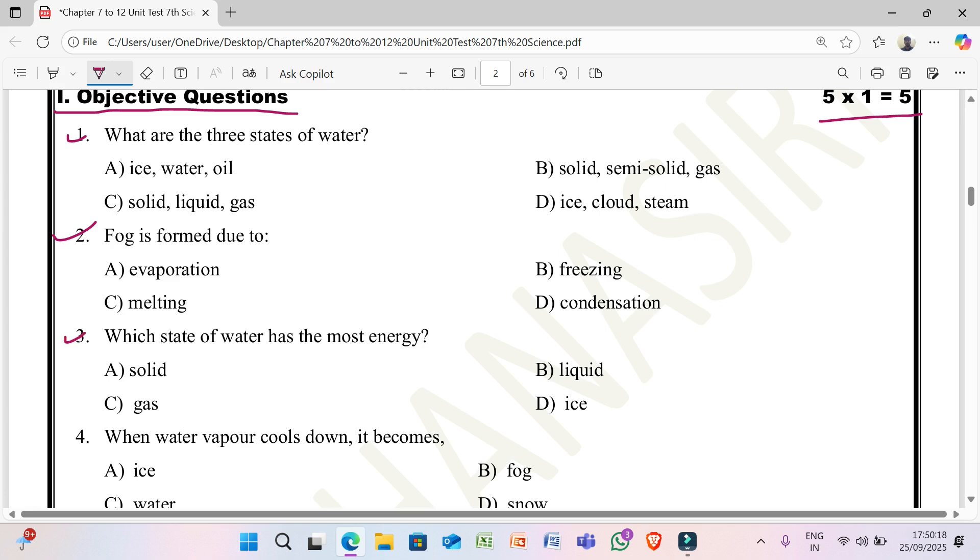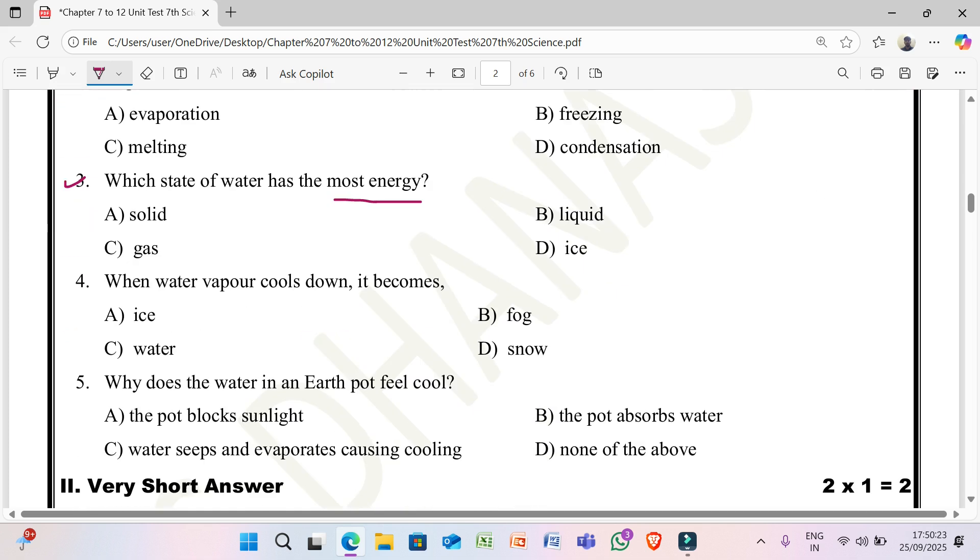Third question: which state of water has the most energy? A) solid, B) liquid, C) gas, D) ice. Fourth one.